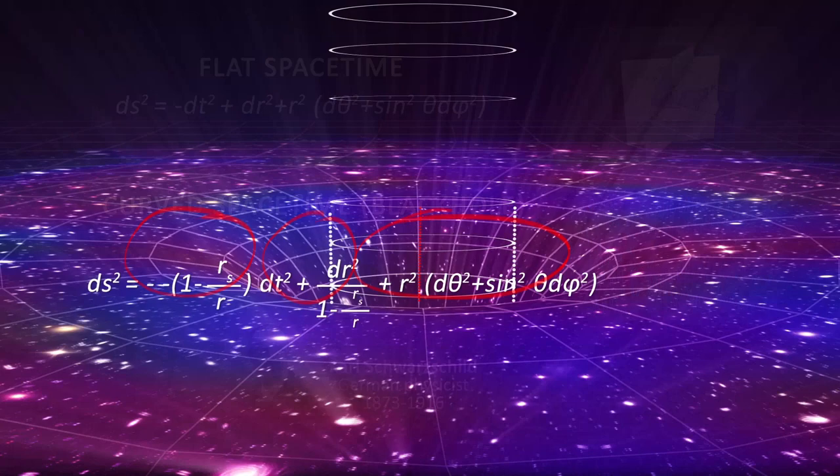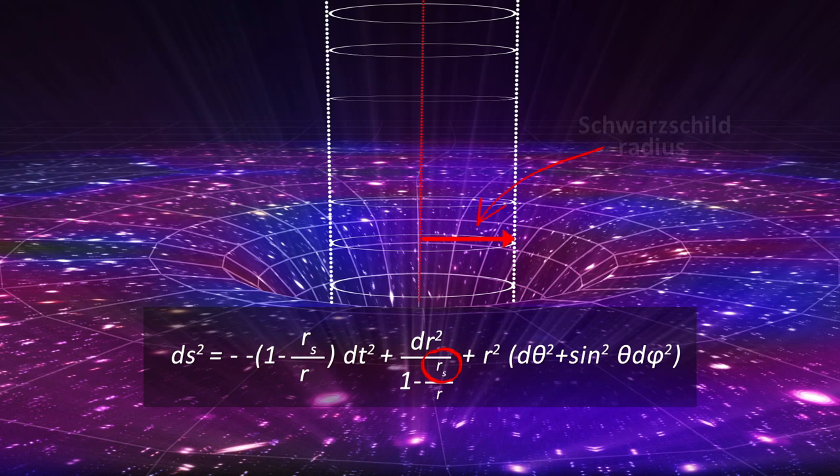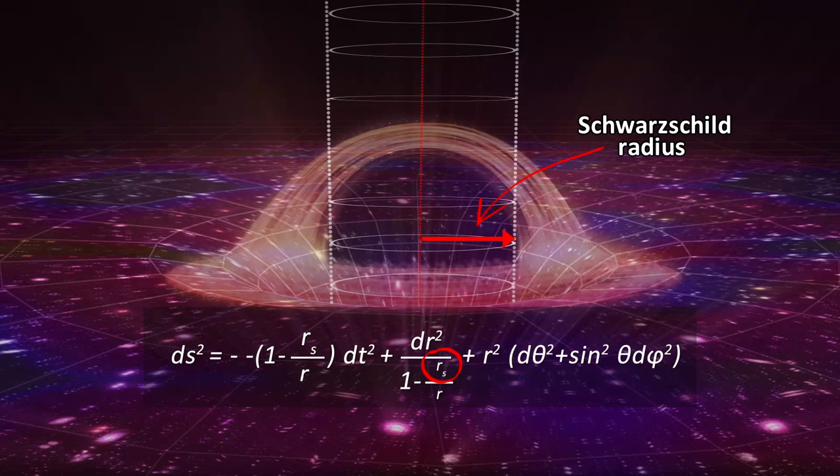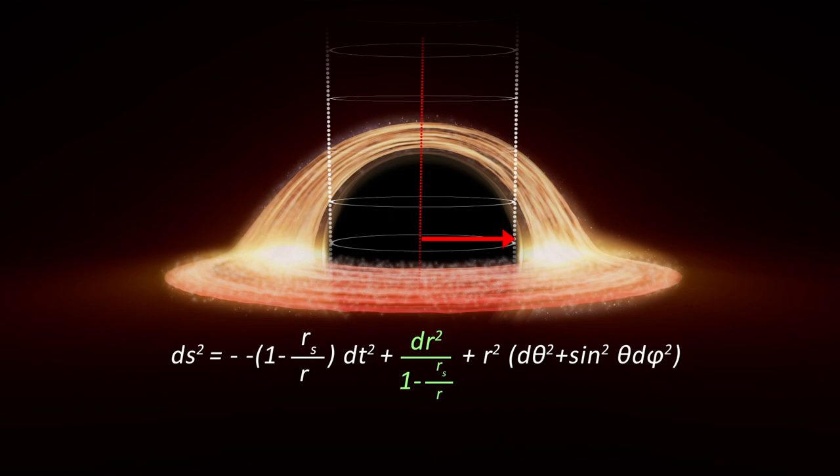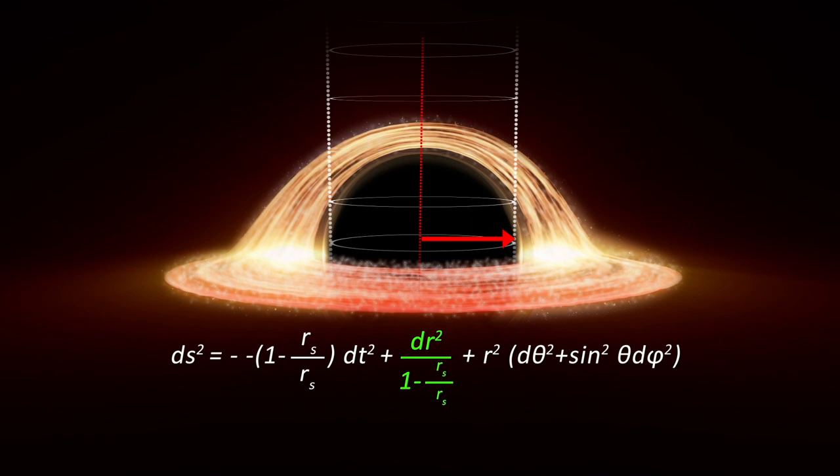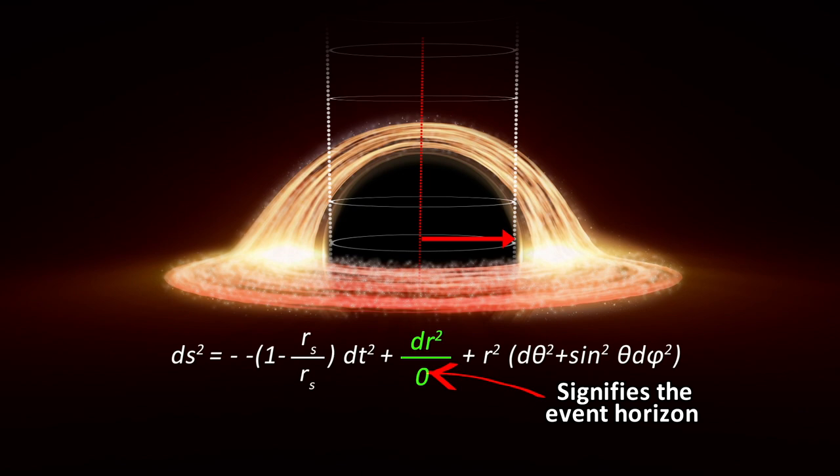It's a point beyond which nothing can escape the black hole because in order to escape you would have to go faster than the speed of light, which you can't do. It's like an information barrier between the inside and outside of the black hole. The important thing to note in this equation is that when r is equal to rs in the dr-squared term, we get a zero in the denominator. This makes the term undefinable. Its physical representation and meaning is the event horizon. The zero in the denominator signifies the point of no escape.